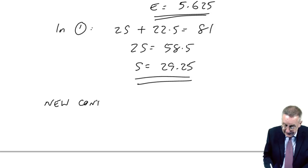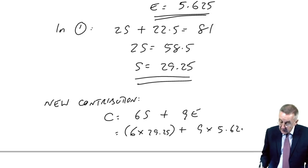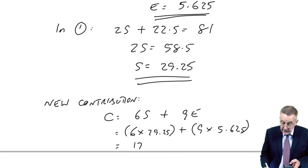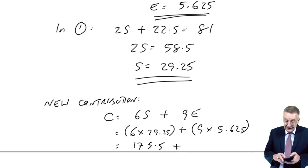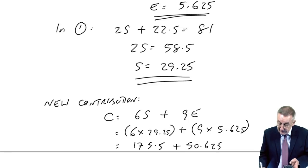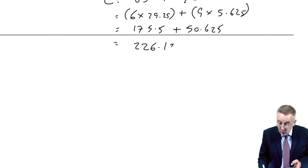The new contribution C, remember, was 6S plus 9E. So 6 times 29.25, 9 times 5.625. The contribution 175.5 plus 50.625. With one extra kilo, I end up with a total contribution of 226.125.